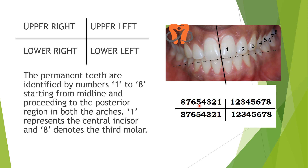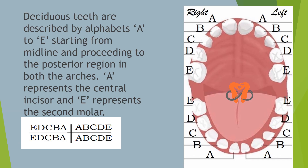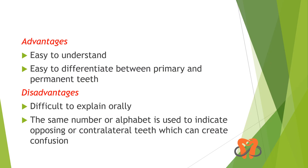The deciduous teeth are described by alphabets from A to E, starting from the midline and proceeding posteriorly. A represents the central incisor, B the lateral incisor, C canine, D first molar, and E the second molar. Similarly, this applies for all quadrants — lower and upper.